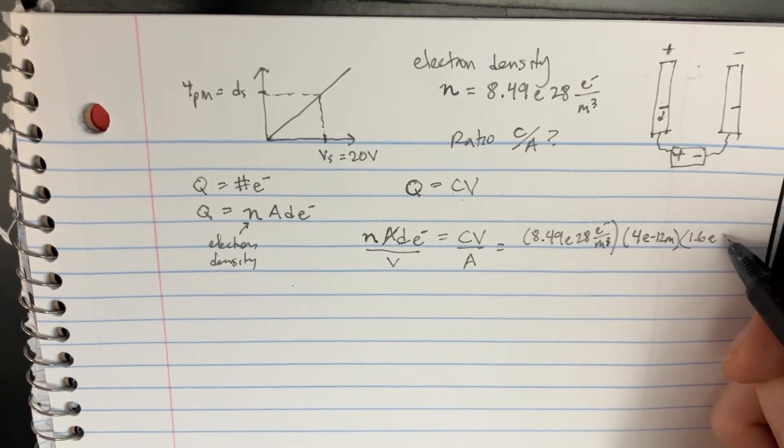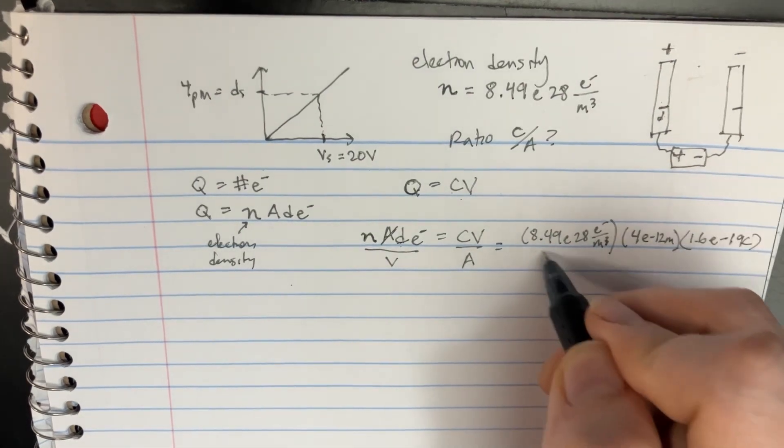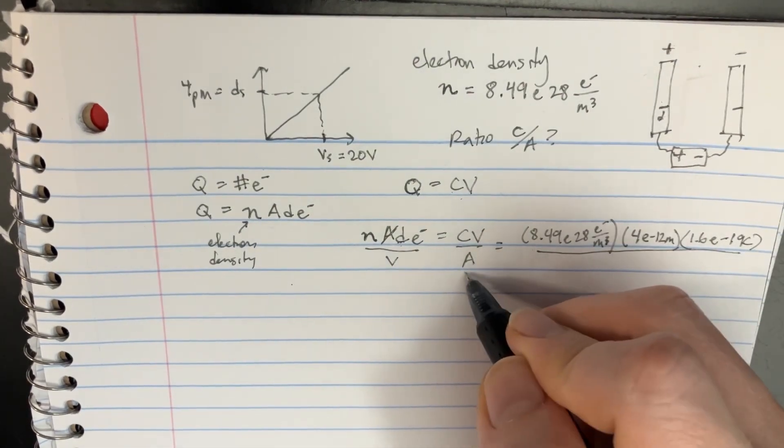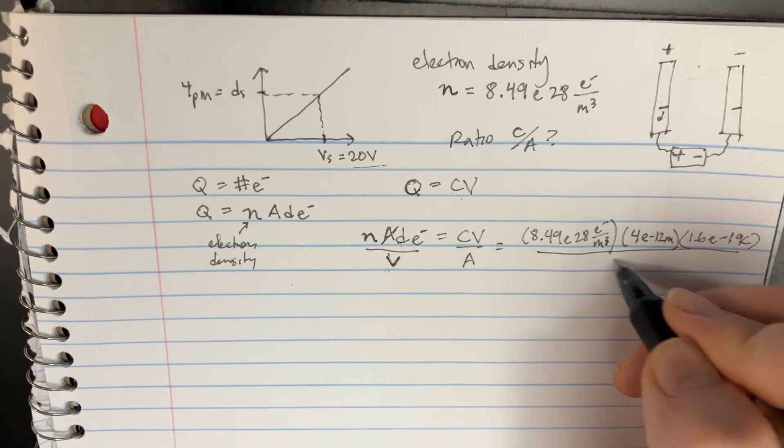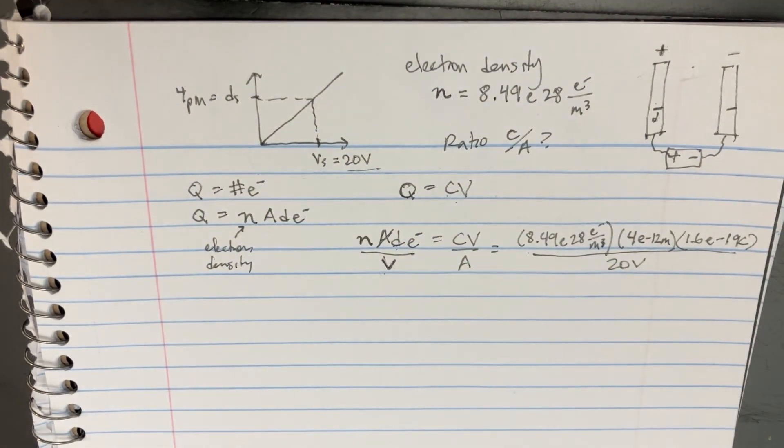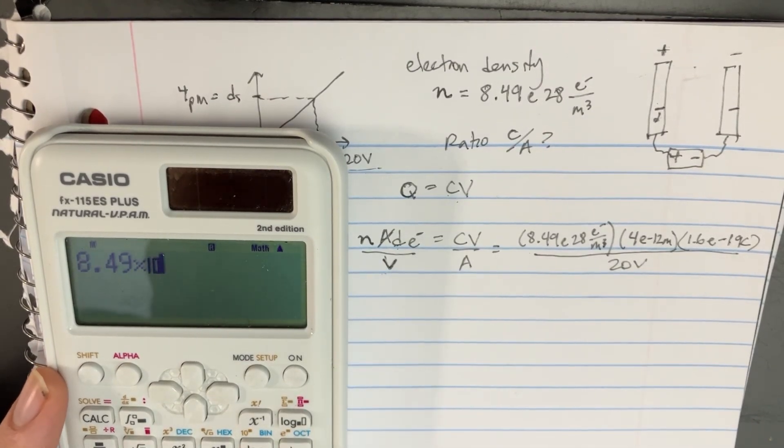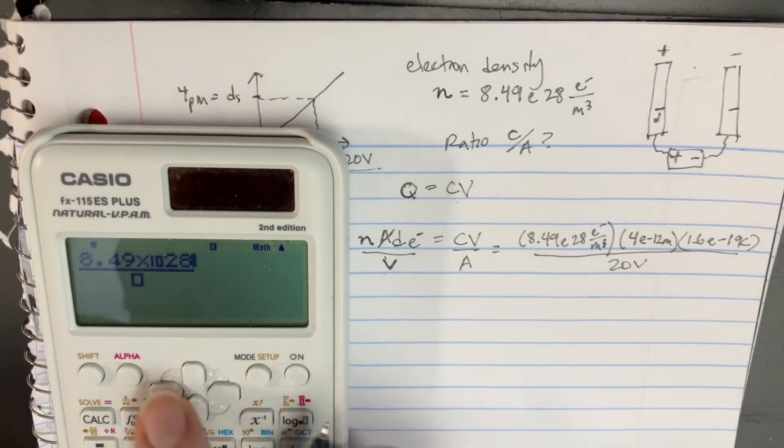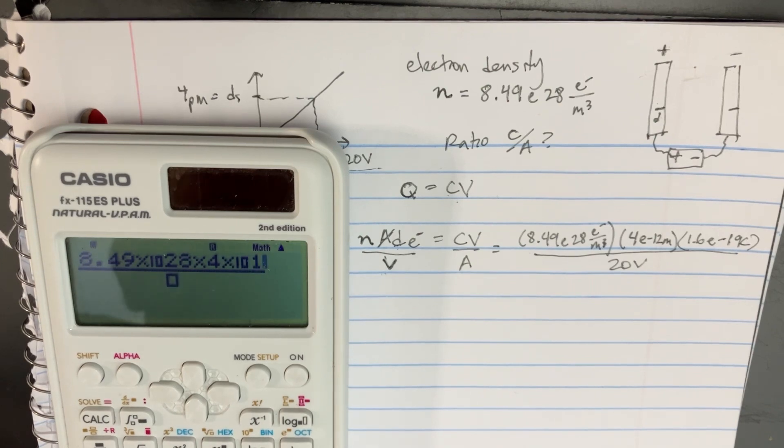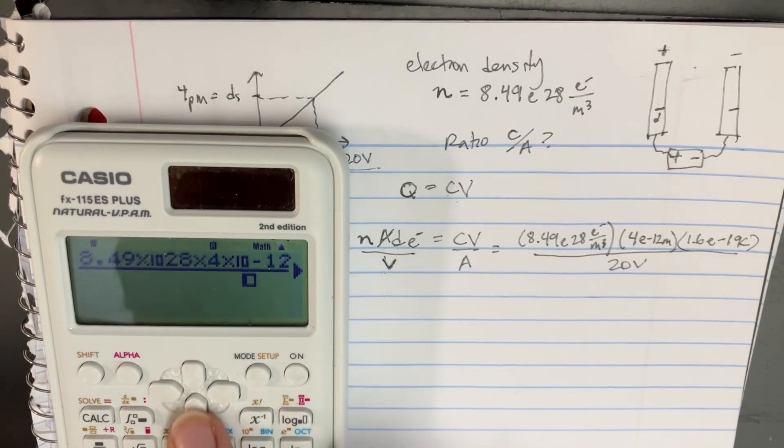And then we have the single ones, then there's going to be over the voltage, 20 volts. Okay great, so we should be able to plug this into the calculator and get an answer. 8.49 e to the 28, and then here there's going to be times 4 e to the negative 12 times 1.6 e to the negative 19 divided by 20.